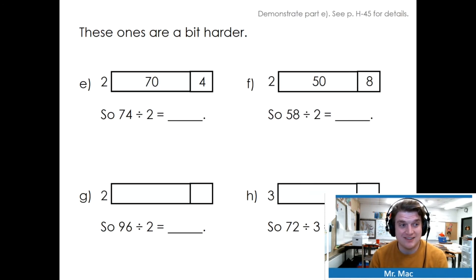These ones are getting a little harder. Let's try one together and then you can try the rest. Half of 70, well we know half of 60 was 30. And 70 is 10 more. We can take 10 and share it with 2 people, which is 5. So we're left with 35. And then 4 divided by 2 is 2. 35 plus 2 is 37.